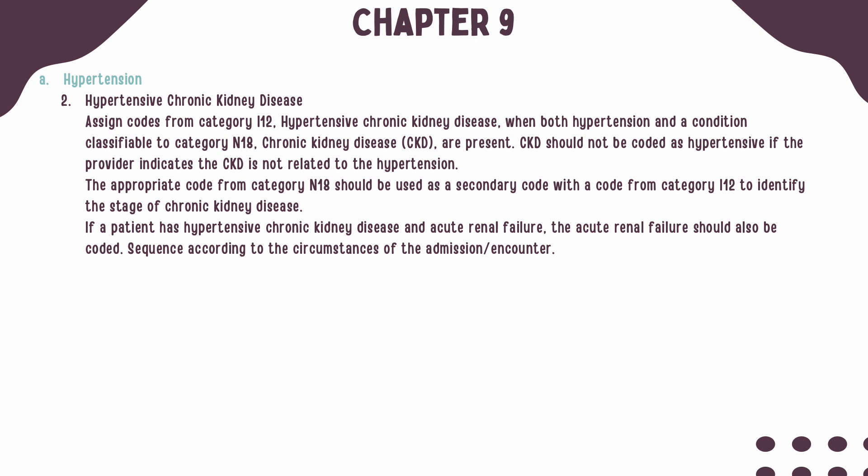When hypertension and chronic kidney disease are related, two codes are required: a code from Category I-12 for the hypertensive chronic kidney disease, and a code from Category N-18 to indicate the stage of chronic kidney disease. The N-18 code should always be sequenced second to the I-12 code. If the patient also has acute renal failure, a code from Category N-17 should also be coded, with sequencing determined by the circumstances of the encounter.